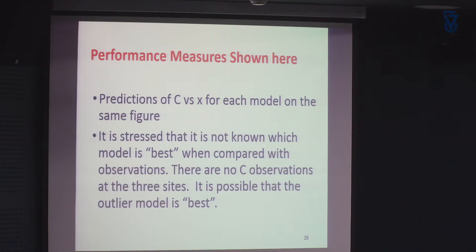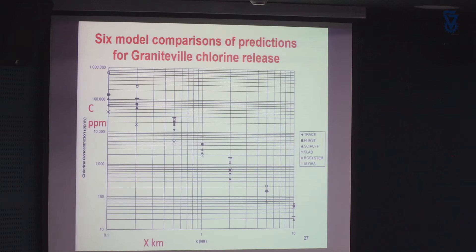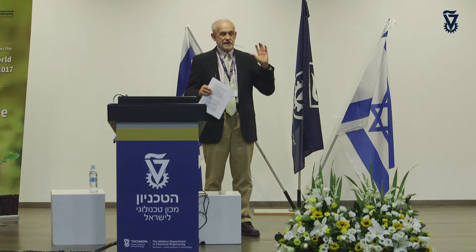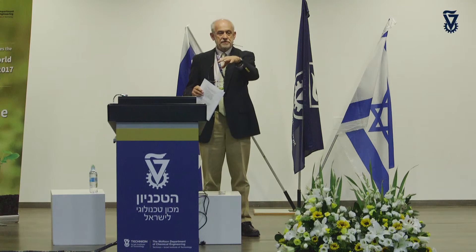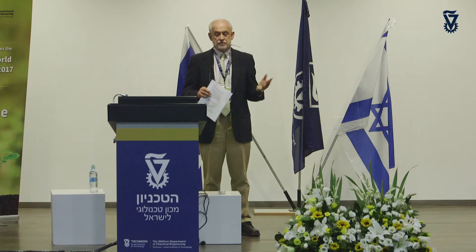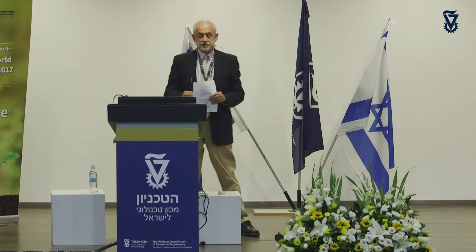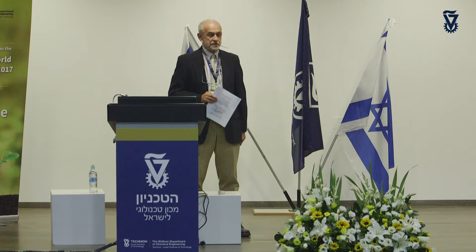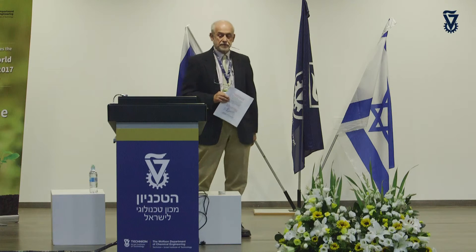I'm now showing the predictions of these six models for the Graniteville scenario. There were no observations — these accidents happen so fast and the cloud moves off within a few minutes, so nobody is out there taking observations. What you see is that the six models all kind of agree with each other — there are no huge outliers — and that was one of the conclusions of the study.